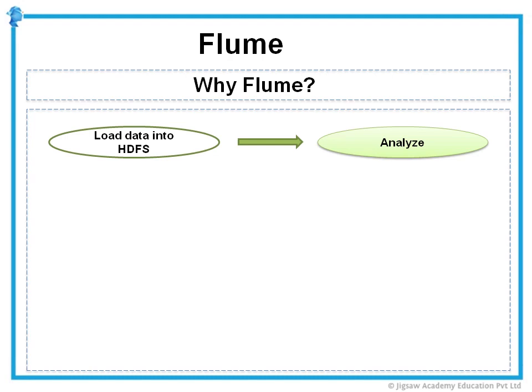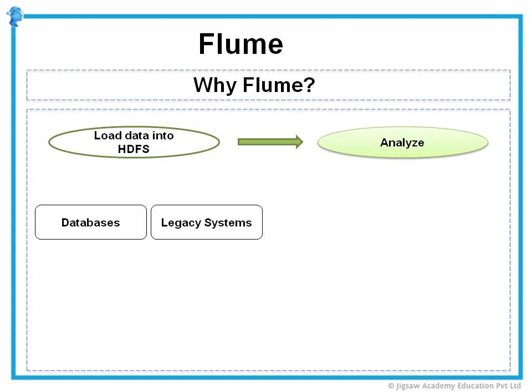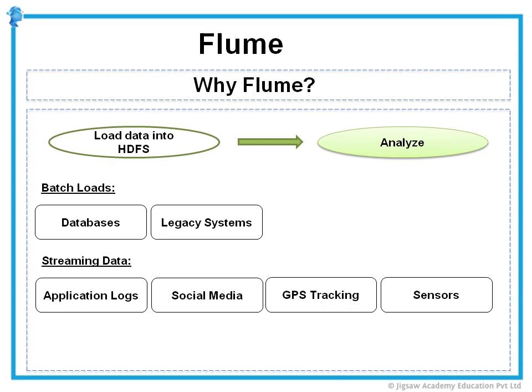Some of the data sources for Hadoop clusters come from bulk loading processes such as databases and legacy systems, and these are primarily batch loads periodically — daily, weekly, monthly, etc. But what has made data really big in recent years is that most new data is contained in high-throughput streams. Application logs, GPS tracking, social media updates and digital sensors all constitute fast-moving streams that need to be moved into the Hadoop distributed file system as they are generated.